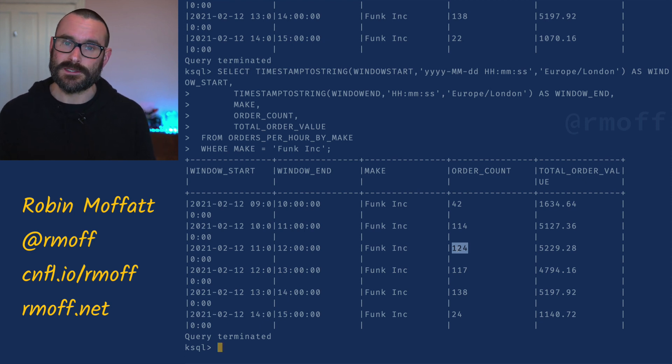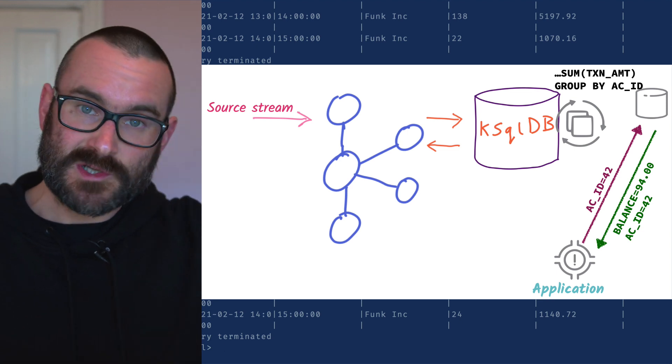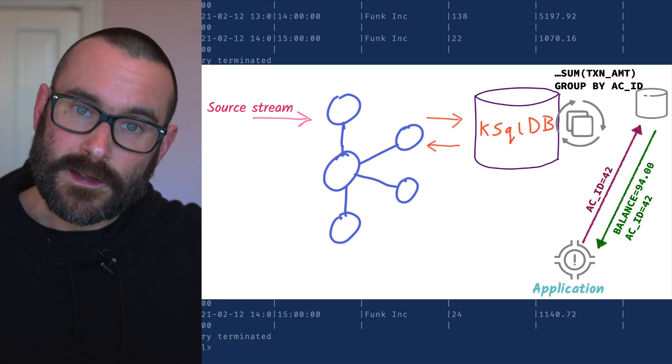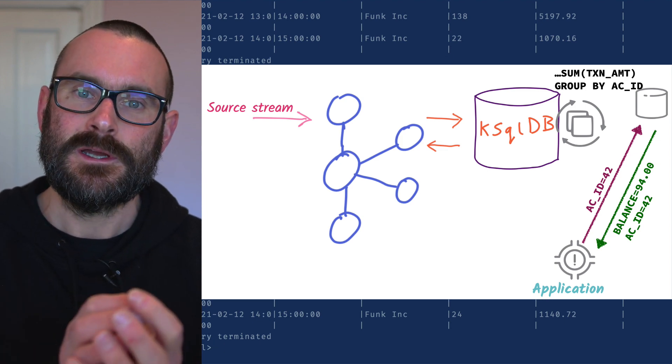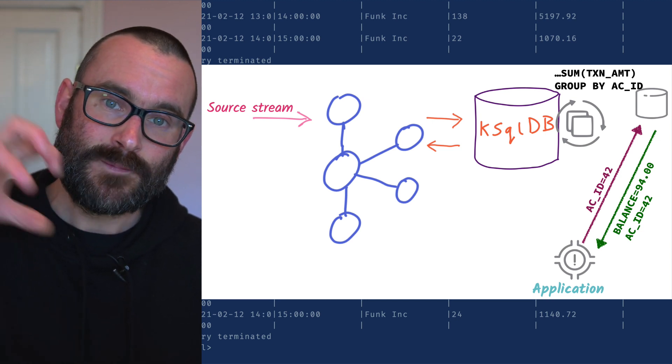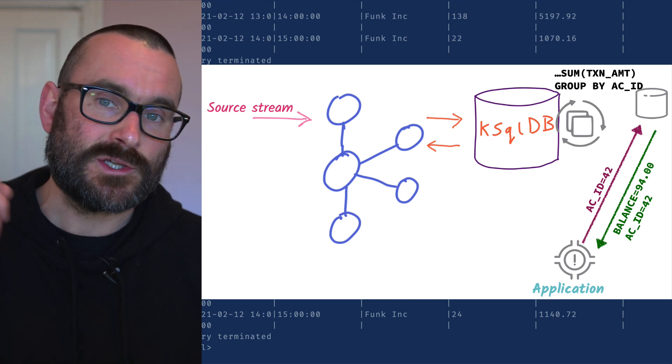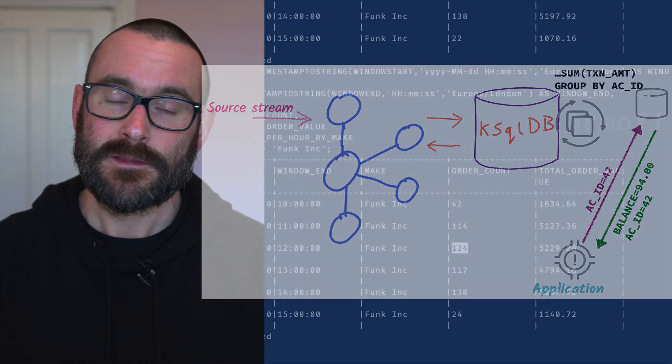What I've been showing with pull queries and push queries is from the command line, but much more useful is building an application that uses the ksqlDB state store to find out state based on a stream of events. You've got a stream of events in a Kafka topic from anywhere, build it into a materialized view or materialized cache, and your application can externally access that cache. You can use a REST API, the Java clients, or community projects around Python, Go, and others that harness that REST API to get data out.